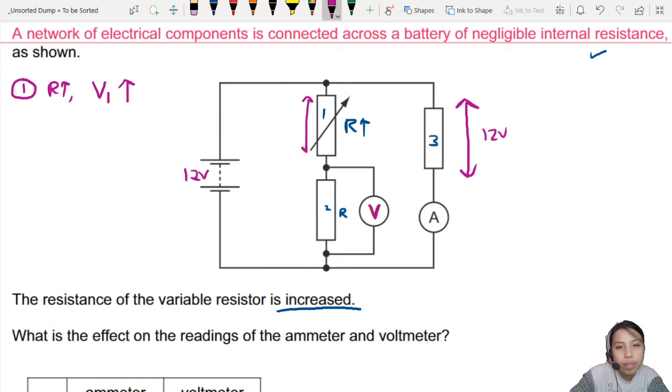So this thing, this amount will increase. Why? Because the larger resistance it has, the more of the share it will take. The more potential difference it will take.